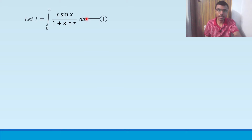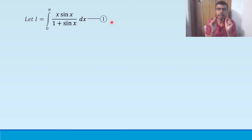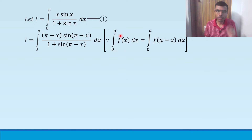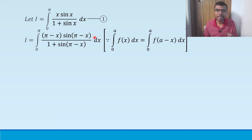Please stay with me and listen carefully if you want to understand. First, take the given integral as I. Let I = integral from 0 to π of x·sin(x) / (1 + sin(x)) dx, and mark it as equation 1. Next, there is a property of definite integration which states that integral from 0 to a of f(x) dx equals integral from 0 to a of f(a - x) dx.